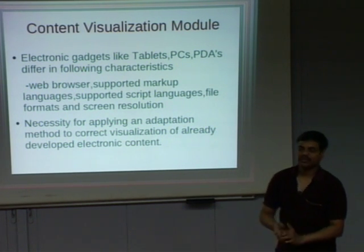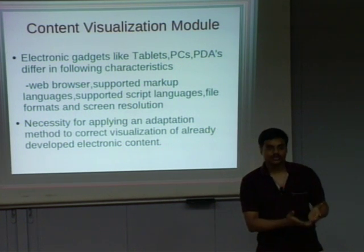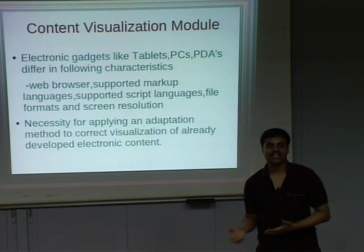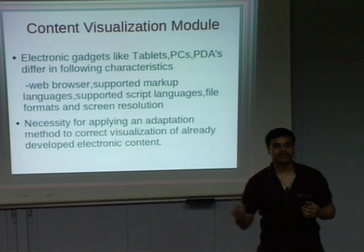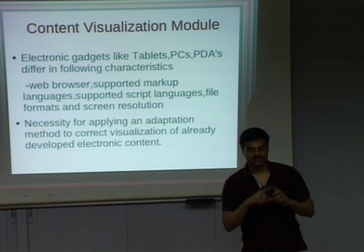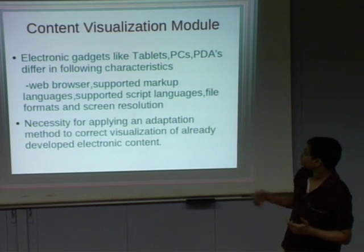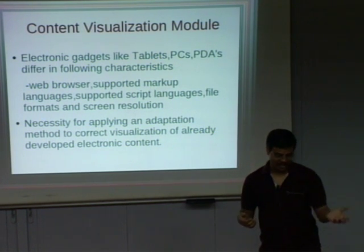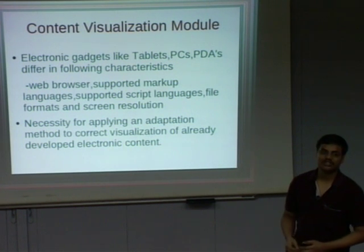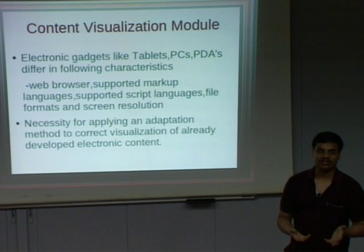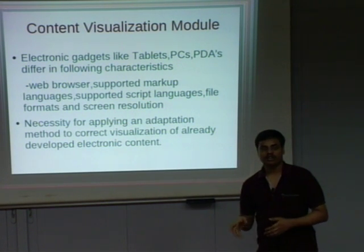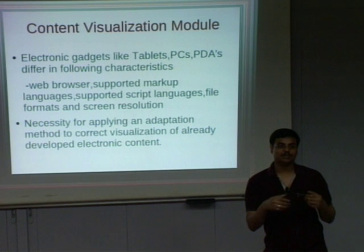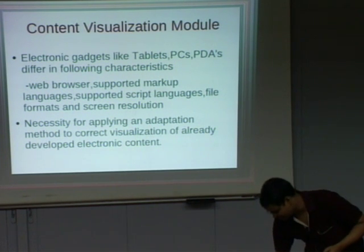If you have developed an online course website, the user may access it via PCs, normal desktop computers, laptops, tablets, or personal digital assistants — anything it might be. The format to send to a tablet is different from the format for personal computers, because screen resolution and display format are different. In web browsers also, there are different markup languages — HTML, XML — and for mobile applications it is WML. So for the developed electronic content, we should be able to send it to different devices depending on which device they are accessing. Hence, a content visualization module is very much important.